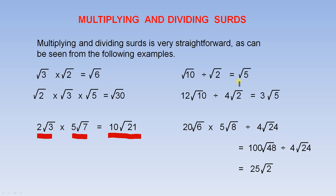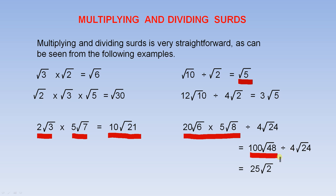The square root of 10 divided by the square root of 2 is the square root of 5, because 10 divided by 2 is 5. 12 times the square root of 10 divided by 4 times the square root of 2 is 3 times the square root of 5: 12 divided by 4 gives 3, and 10 divided by 2 gives 5. In a more complex example: 20 times the square root of 6 multiplied by 5 times the square root of 8, divided by 4 times the square root of 24. 20 times 5 gives 100; 6 times 8 is 48, giving 100 times the square root of 48. Then 100 divided by 4 gives 25, and 48 divided by 24 gives 2, so the answer is 25 times the square root of 2.